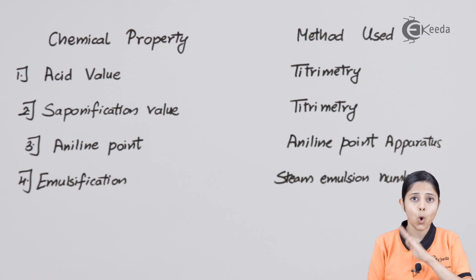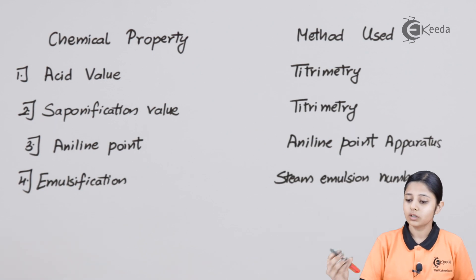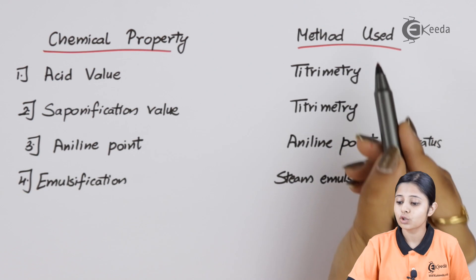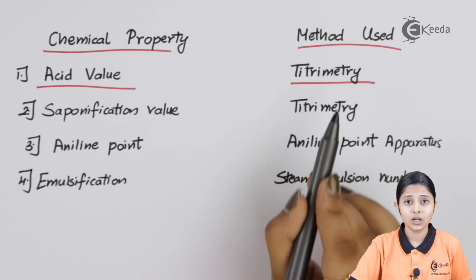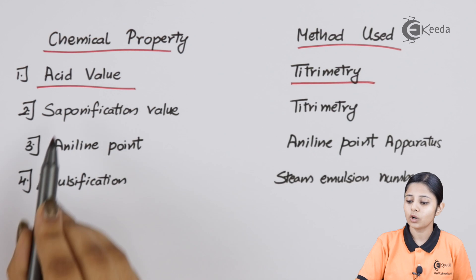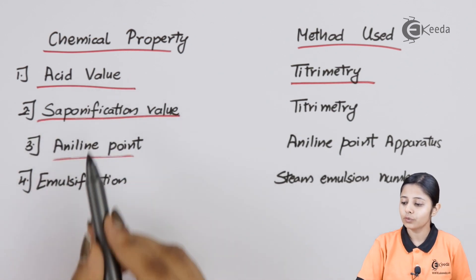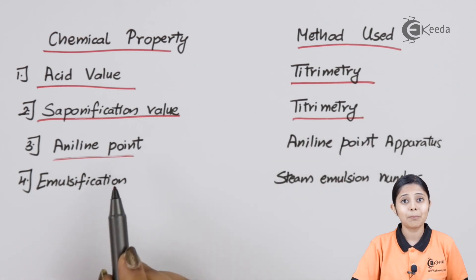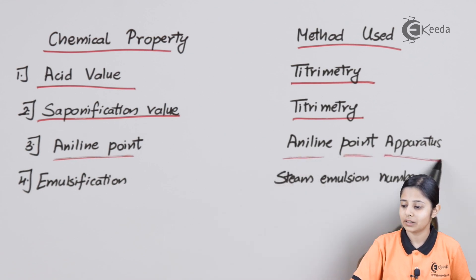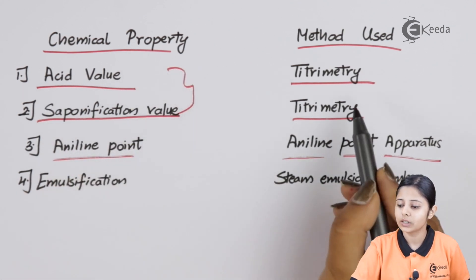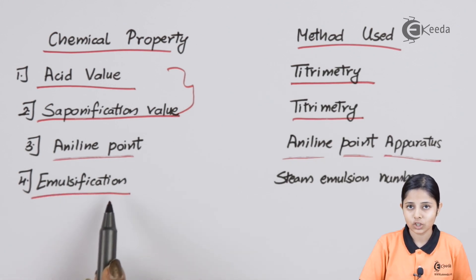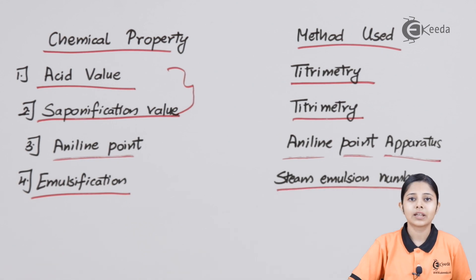Next we move on to the chemical properties. There are four chemical properties and methods used to determine them. The first is acid value — the amount of acid present in the lubricant — determined by titrimetry. Titrimetry also helps find the saponification value and the aniline point, though the aniline point also has a dedicated aniline point apparatus. Finally, emulsification is determined by the steam emulsification number, which tells us the emulsification of that respective lubricant.